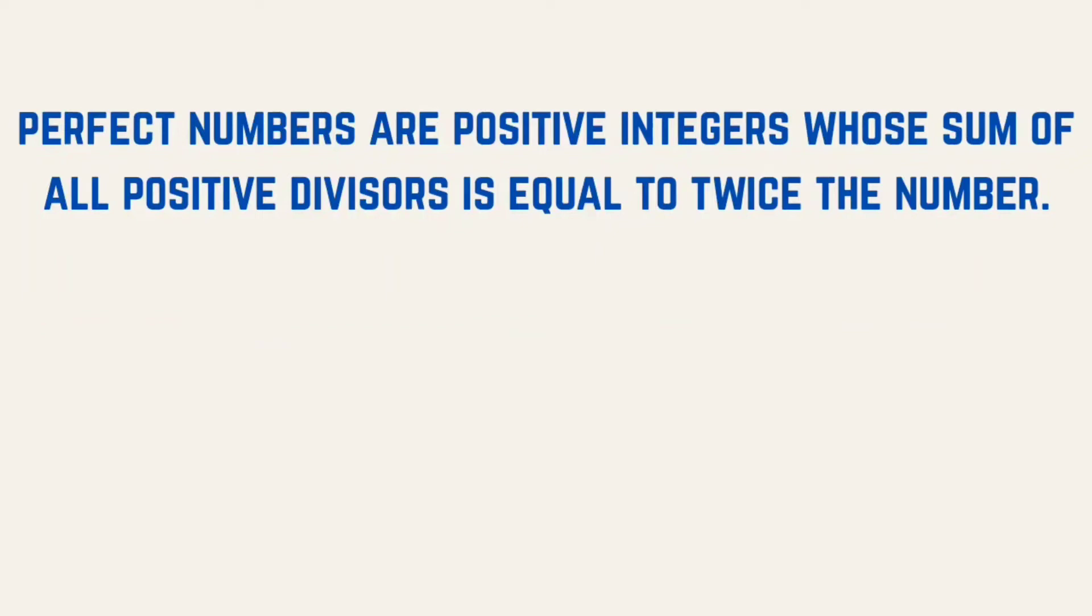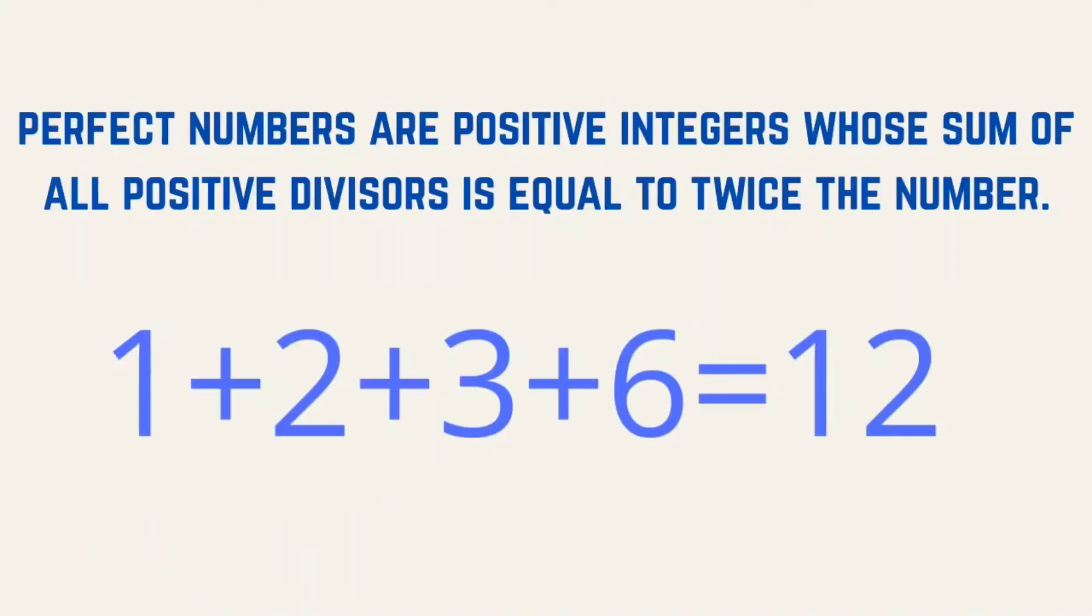You can also define perfect numbers as positive integers whose sum of all positive divisors is equal to twice the number. The divisors of 6 are 1, 2, 3, and 6.